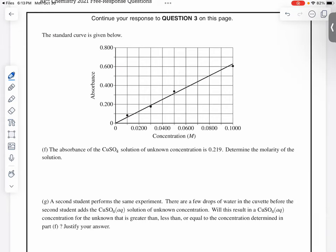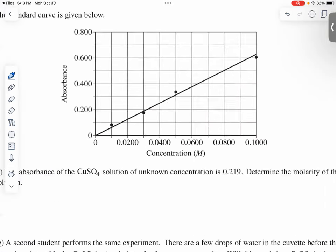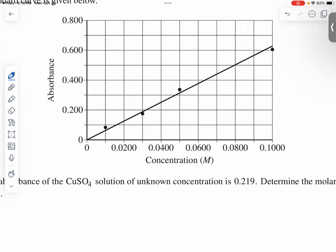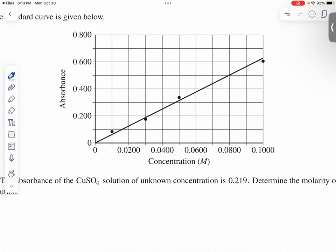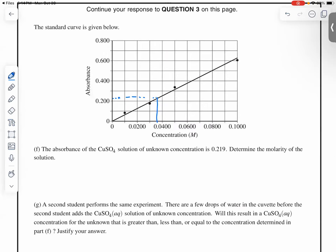The absorbance of the CoSO4 solution of unknown concentration is 0.219. Determine the molarity of the solution. So 0.214... this is point... So 0.214 would be something like this. So anywhere that's around 0.03... Yeah, it doesn't matter. 0.03635. That would be fine.